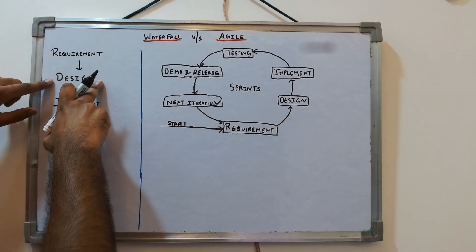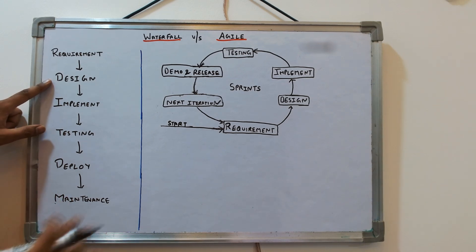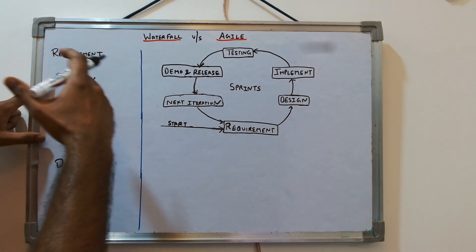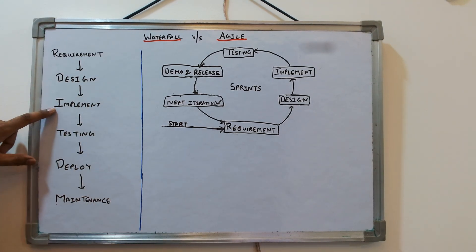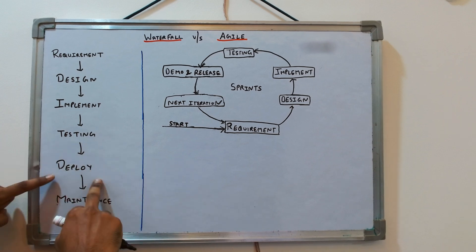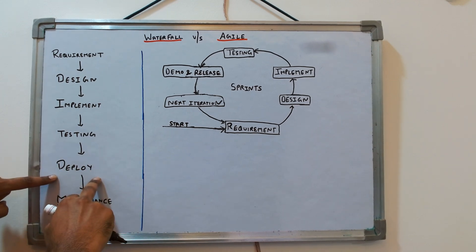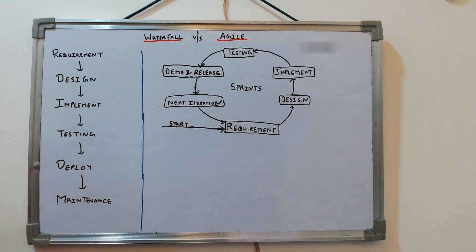The second phase is design, where you do all the system design related stuff and decide how the new feature is going to look like. Then ultimately you start the implementation, which is nothing but you start the coding. Once done, you do proper testing, then you deploy it live, and then you have to do maintenance. This is the waterfall model.